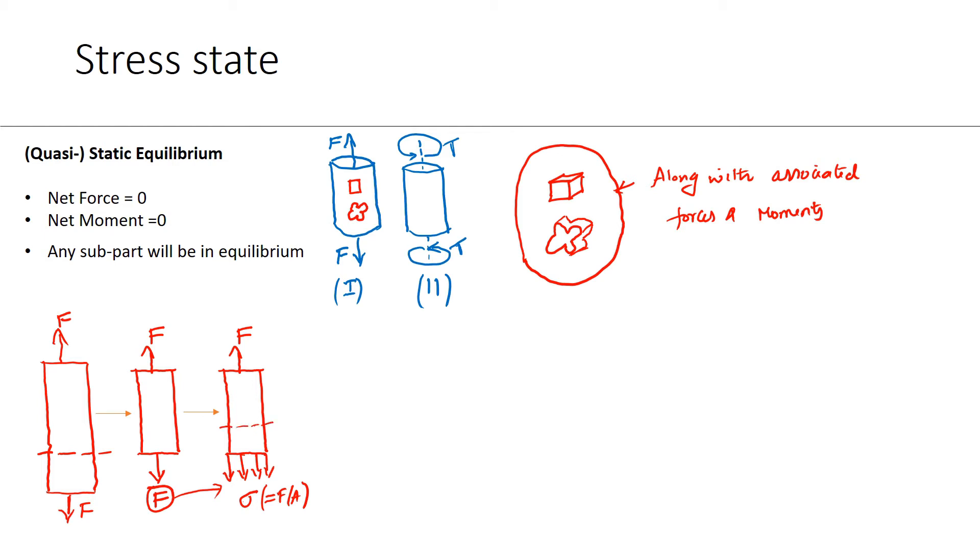Again doing the same thing, we'll subject that to equilibrium and get the stresses on both faces. Let me again do two vertical cuts here and we'll get the subpart which is also in equilibrium. These two faces don't have any stresses, right? So could you explain why?